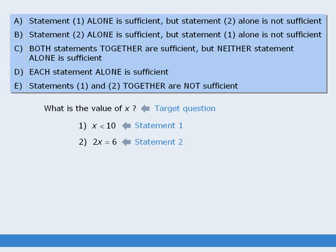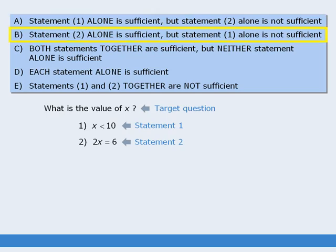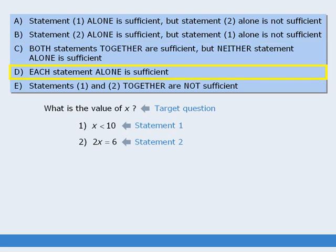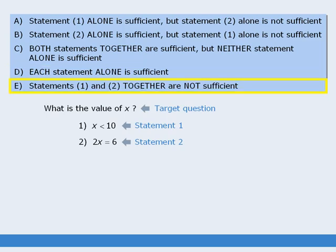The five answer choices are all related to whether or not each of the two statements provides enough information to answer the target question. Select answer choice A if statement 1 alone is sufficient but statement 2 alone is not. Select B if statement 2 alone is sufficient but statement 1 alone is not. Select C if statements 1 and 2 together are sufficient but neither alone is. Select D if each statement alone is sufficient, and select E if statements 1 and 2 together are not sufficient.